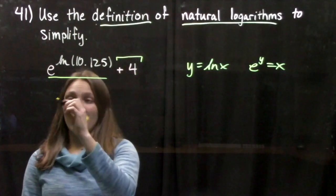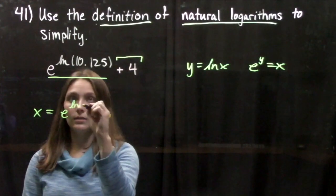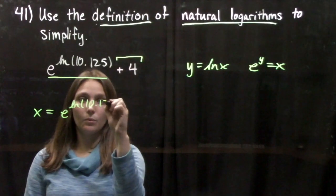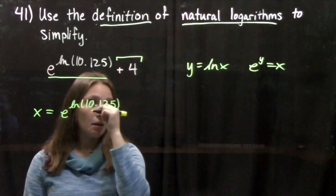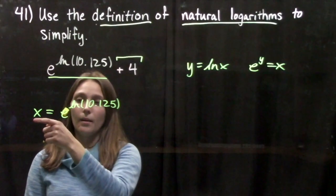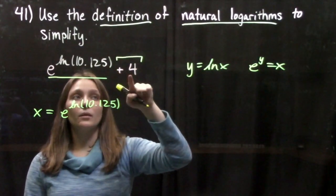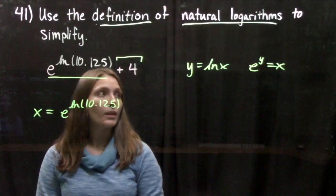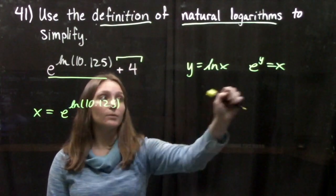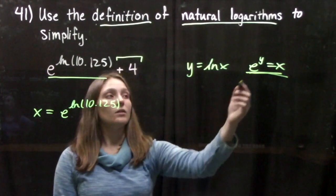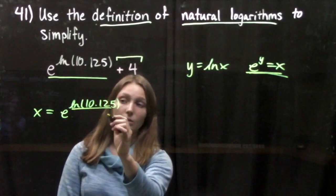Now to focus on this, I'm going to give it a name and call it x. So I say x equals e to the natural log of 10.125. So now we have that, and what we're going to do is translate this statement through these statements so that we get a number that can combine with 4 more easily. When we look at our equations, we have e to a power equals x, which is similar to this one right here. So if we look at that, we have our x, we have our e, so that leaves this portion as our y.